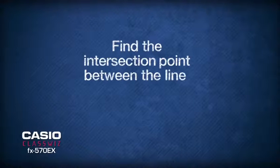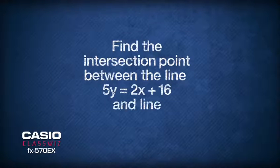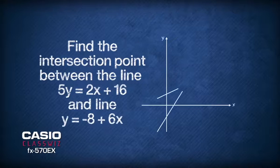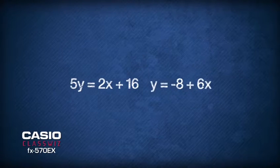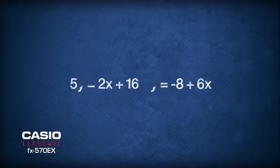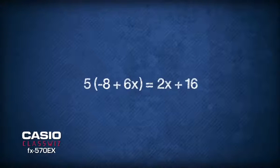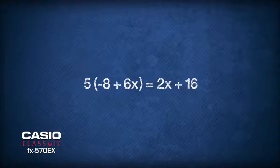The question asks: find the intersection point between the line 5y equals 2x plus 16 and the line y equals negative 8 plus 6x. To find the intersection point between these two equations, we need to perform simultaneous equations. We shall perform simultaneous equations by elimination, where we substitute y equals negative 8 plus 6x as a replacement for the term y in the equation 5y equals 2x plus 16.